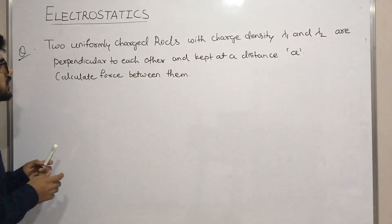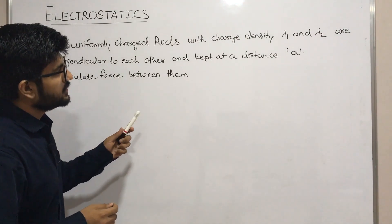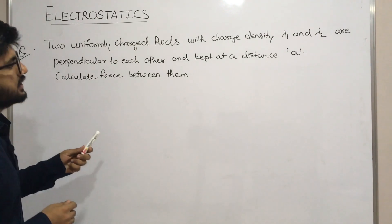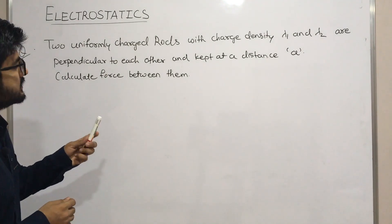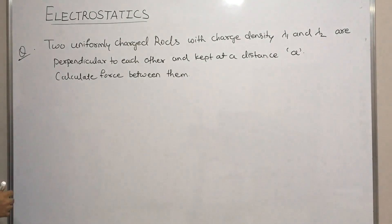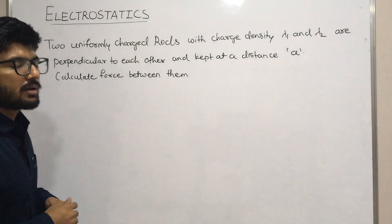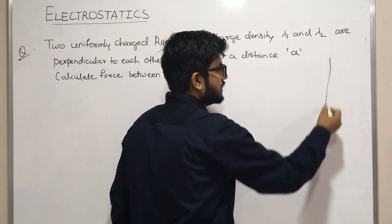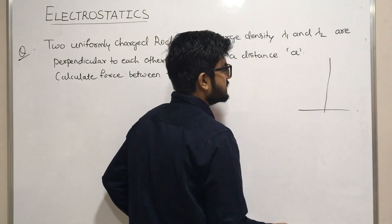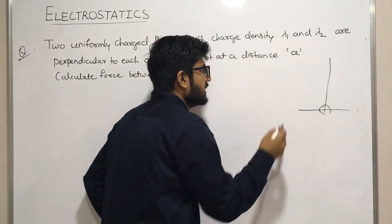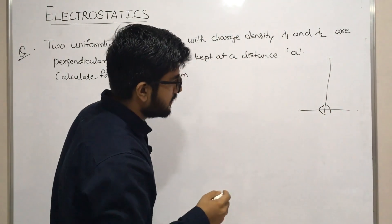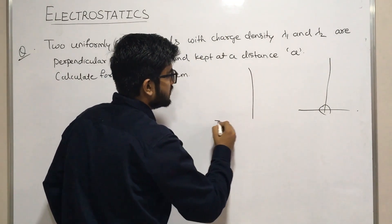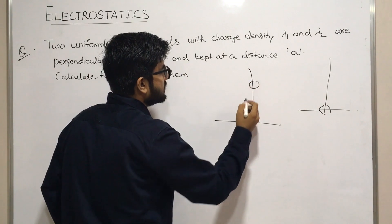Now let's take this question. Two uniformly charged rods with charge density λ1 and λ2 are perpendicular to each other and kept at a distance a. Calculate the force between them. If we have perpendicular lines in two dimensions they would intersect, so we need to go to three dimensions. One rod is along one axis and the other is along a perpendicular axis, separated by distance a.